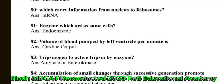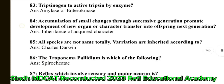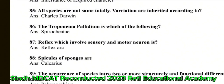Question 81: Enzymes which act within the same cells — the correct answer is endoenzymes. Question 82: Volume of blood pumped by left ventricle per minute — the correct answer is cardiac output. Question 83: Trypsinogen converted to active trypsin by enzymes — the correct answer is enterokinase. Question 84: Accumulation of small changes through successive generations promoting development of new organs transferred to offspring — the correct answer is inheritance of acquired characters. Question 85: All species are not totally the same; variations are inherited according to Charles Darwin. Question 86: Trypanosoma, Plasmodium — the correct answer is Sporozoa.